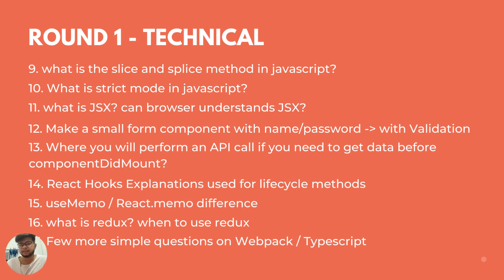The next set of questions included: what is the slice and splice method in JavaScript and what is the key difference between them? What is strict mode in JavaScript? What is JSX and can a browser directly understand JSX? The answer is no. When I said no, he asked me to explain how the browser then understands JSX. When you run npm run build on a React app, the Babel transpiler transpiles all your code from JSX to ES5 code, which is readable by the browser.